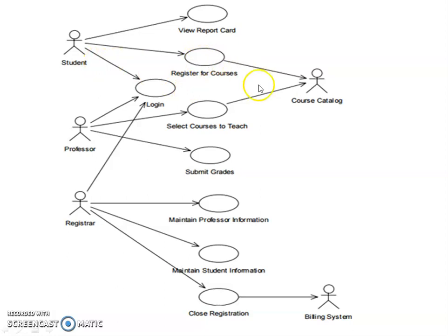For registering the courses, he can see the course catalog. And the professor can log in, then he can select the courses to teach. For selecting that course, he can refer course catalog, and the professor can submit grades. Registrar can log in and registrar is the administrator, and he can maintain professor information and maintain student information. He can close registration after reaching the closing date. Then after closing registration, the billing system enters. So this is the simple examples for use case diagram.